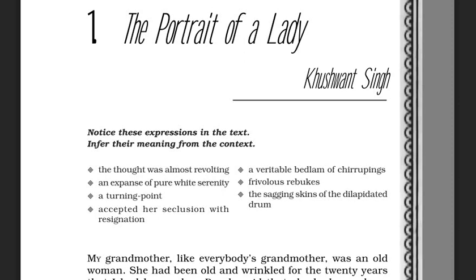Let's discuss about the author. Khushwant Singh was an Indian novelist. He was a lawyer, journalist, as well as a politician. He was born on February 2, 1915. He took his education in Lahore and later went to Delhi for higher education, and then to London. As an Indo-Anglian novelist, he is best known for his humor and an abiding love of poetry.